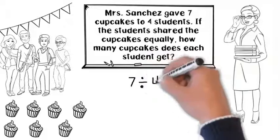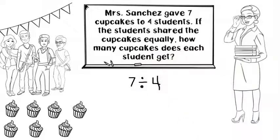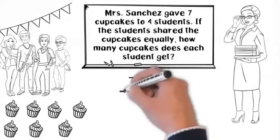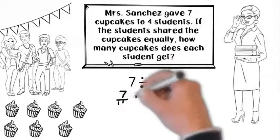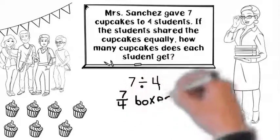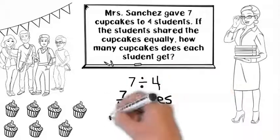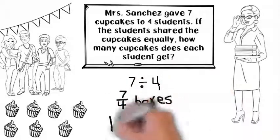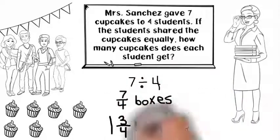Therefore, it's 7 cupcakes divided among the 4 students, so 7 divided by 4. We get 7 fourths, which is equal to 1 and 3 fourths.